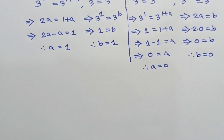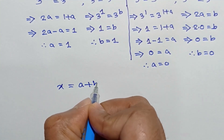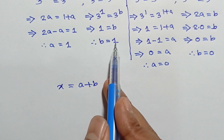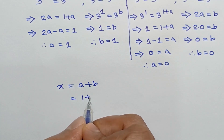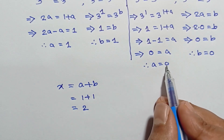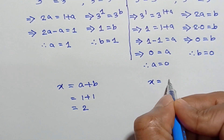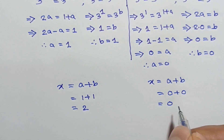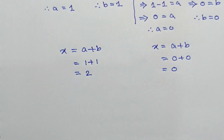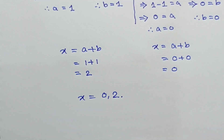Now from equation 3, we know x is equal to a plus b. When a is equal to 1 and b is equal to 1, then the value of x is equal to 1 plus 1 is equal to 2. And when a is equal to 0 and b is equal to 0, then x is equal to 0 plus 0 is equal to 0. So the integer solutions of this equation are x equal to 0 and x equal to 2.